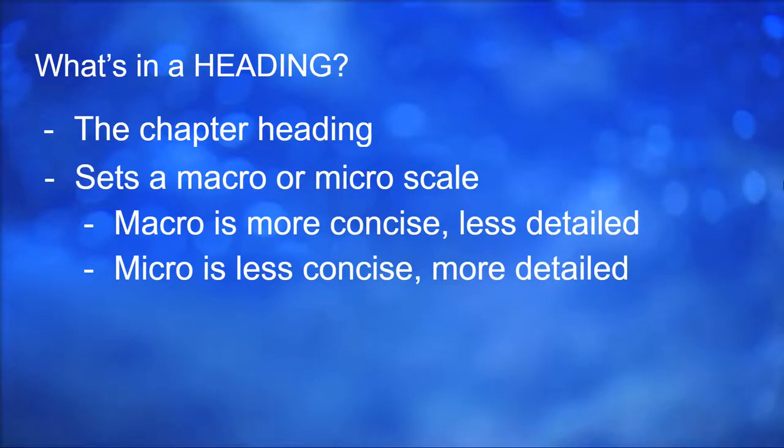So if your heading is really macro like chemistry or physics, then your notes are going to be really broad, more concise and less detailed. But if your headings are really micro, so they're very focused on topics like aldehyde and ketones, really specific, it's going to be less concise and really much more detailed.